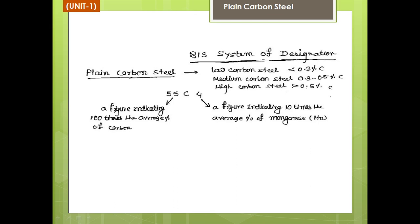First, calculate the average percentage of carbon and multiply by 100 — this gives the figure before C. So here that figure is 55. After writing 55, write capital C. Then after C, write the figure representing the percentage of manganese, which is 10 times the average percentage of manganese. That figure here is 4.